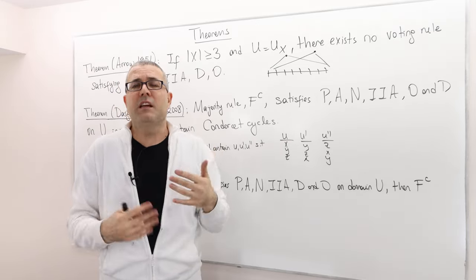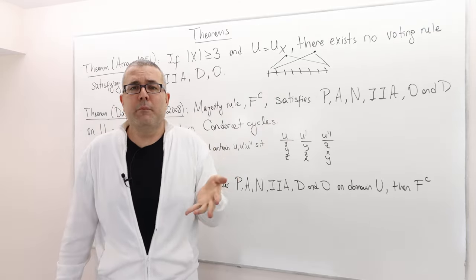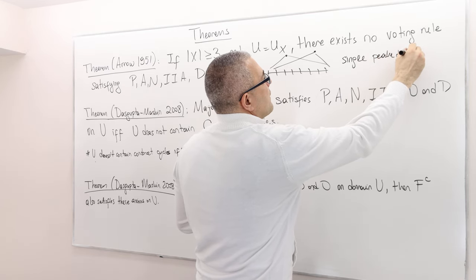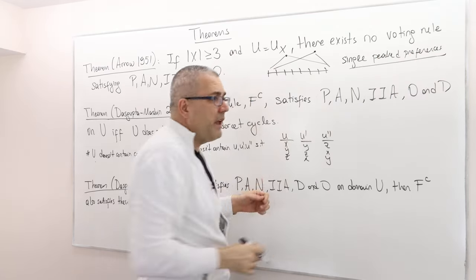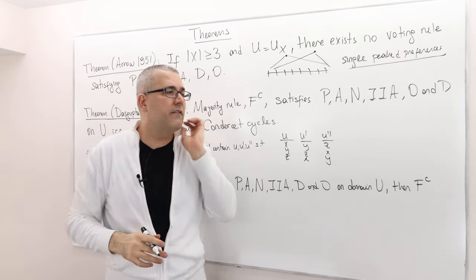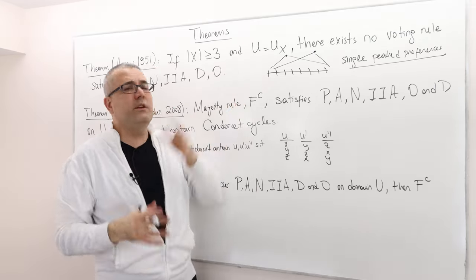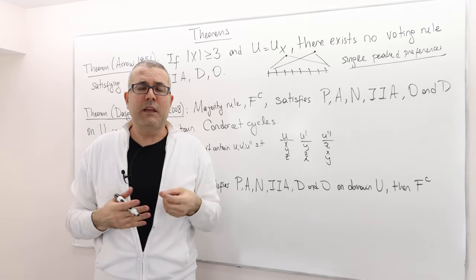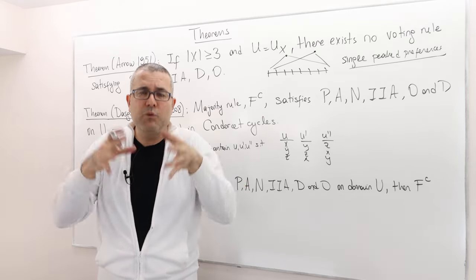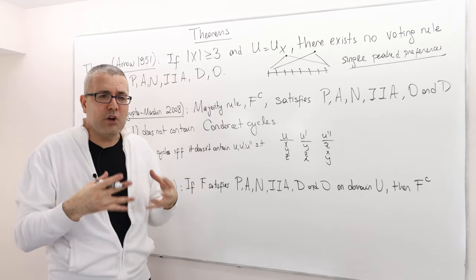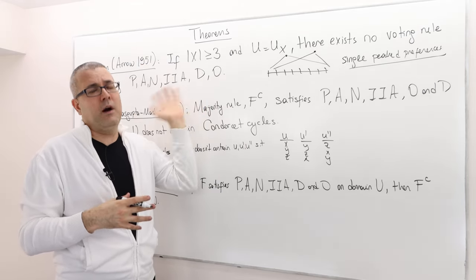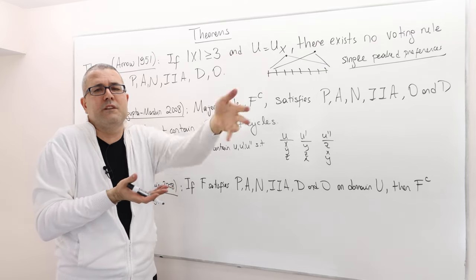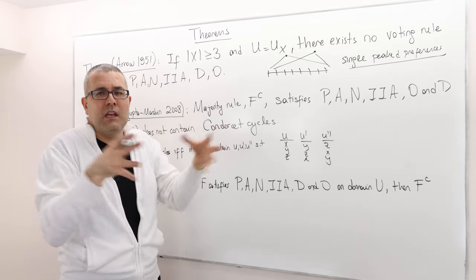For example, in voting situations that preference domain, it's called single-peaked preferences, makes a lot of sense. Sometimes we have expected utility theory. Here all the utility functions are allowed, but what if the voters are expected utility type? Not all utilities are okay, but we restrict our attention to some preference domain.